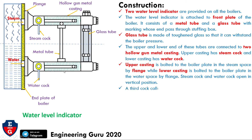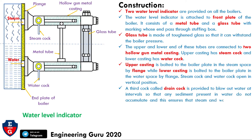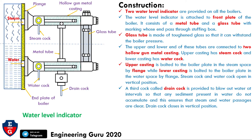A third cock called the drain cock is provided to blow out water at intervals so that any sediments present in the water do not accumulate. This ensures that the steam and water passages are clear. The drain cock closes in the vertical position — this is different from the other two cocks. The drain cock is mainly used to keep the steam and water passages clear.